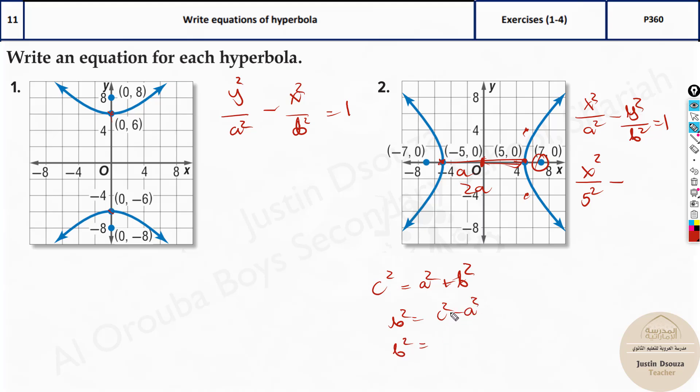b squared equals what is c squared? c value is the focus value, that is over here 7. 7 squared minus we know a squared is 5 squared. So it'll be 49 minus 25 that will be 24. So b squared value is 24. So all I do is write it as 24 equals 1. So the final answer will be x squared by 25 minus y squared by 24 equals 1.